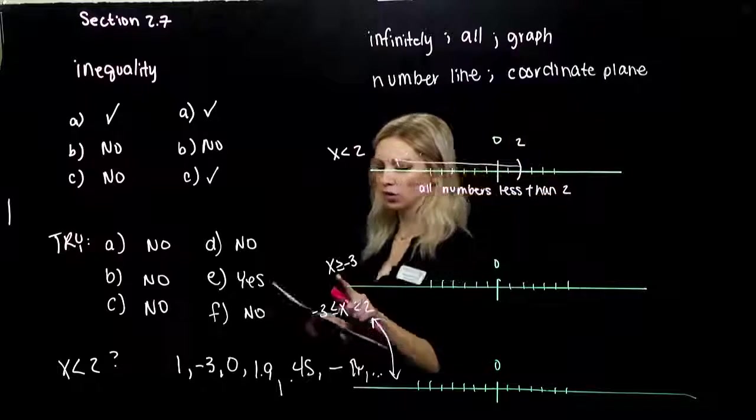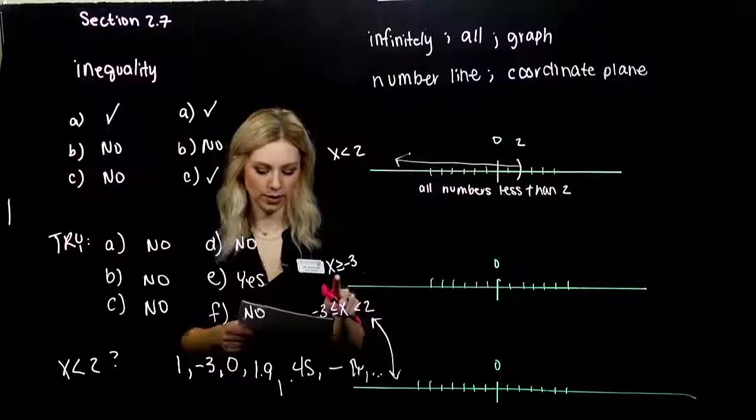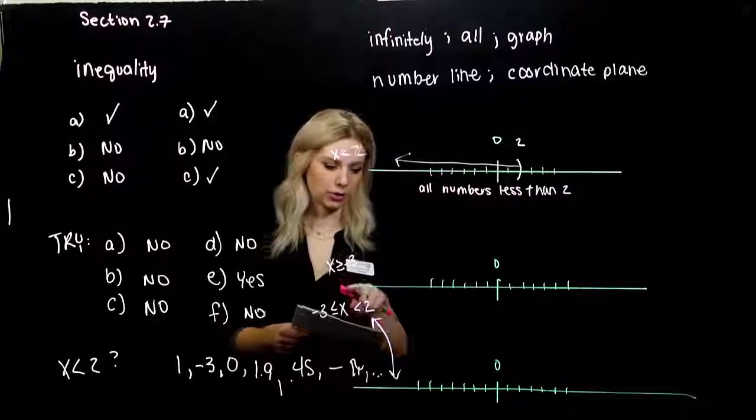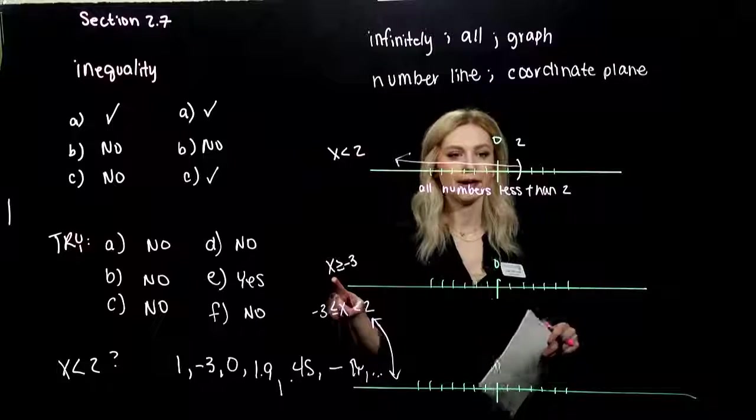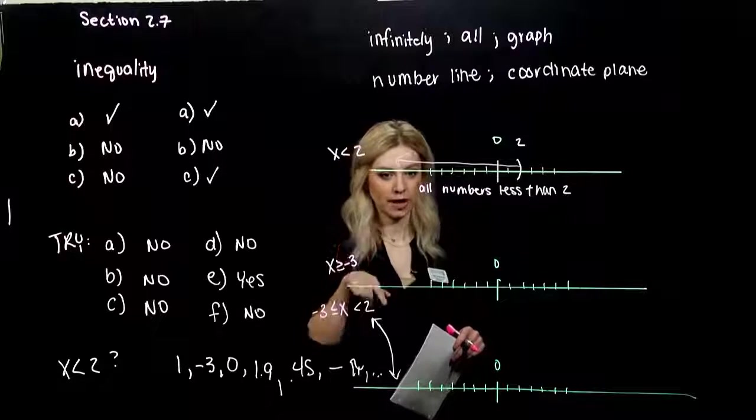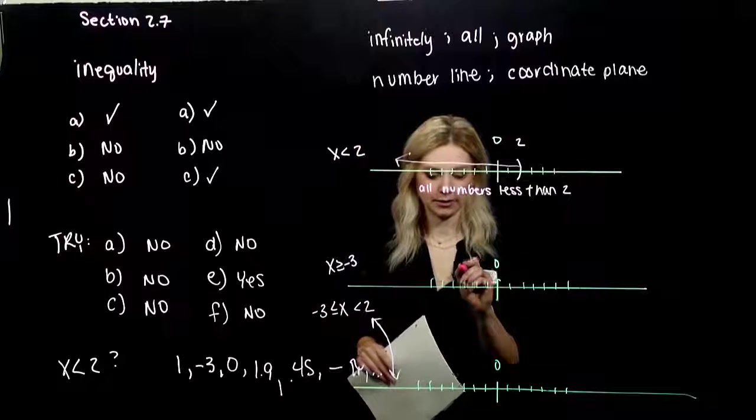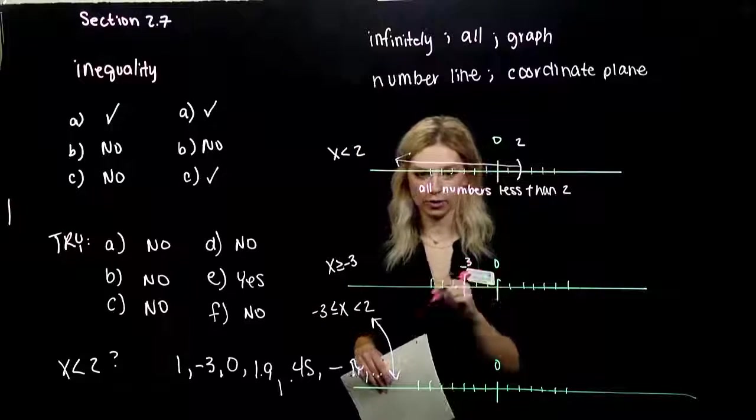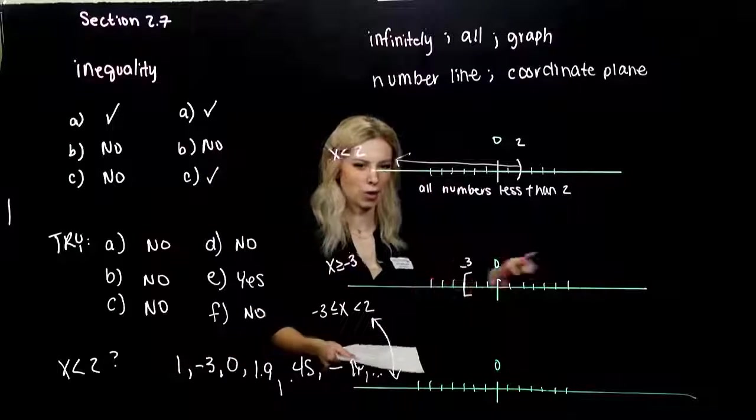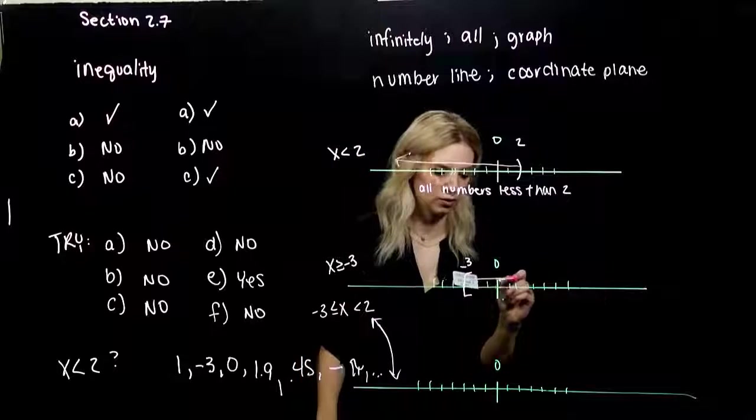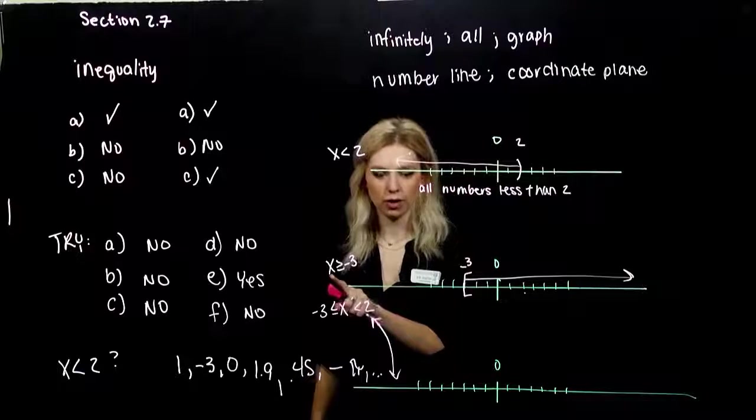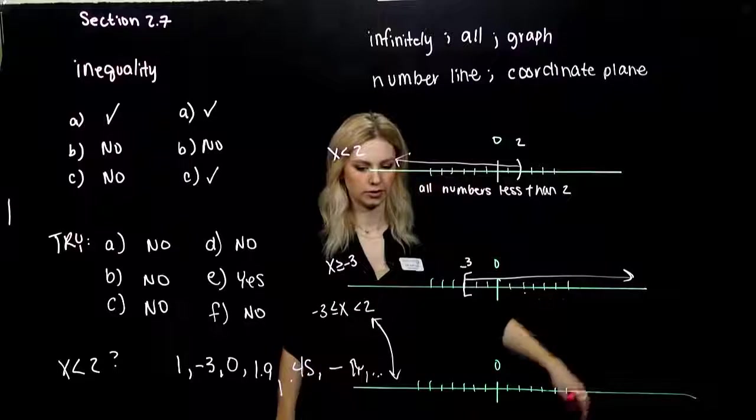Next one. X greater than or equal to minus three. All numbers greater than or equal to minus three. Can I plug in minus three exactly here? Yes, because I have that equality option. So I'm going to have a closed bracket on minus three, telling me I can include minus three because I have the equality case. And we want anything greater than that, so to the right. And again, if you weren't sure, pick a number in here like two. Is two greater than or equal to minus three? Yes. So we went in the right direction.